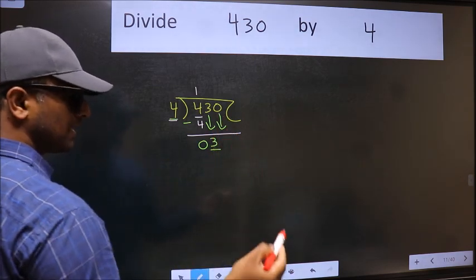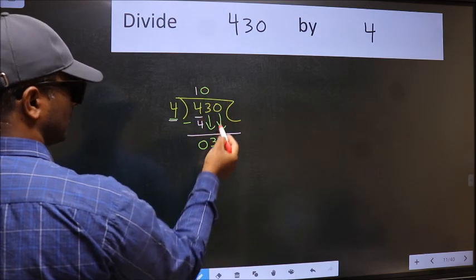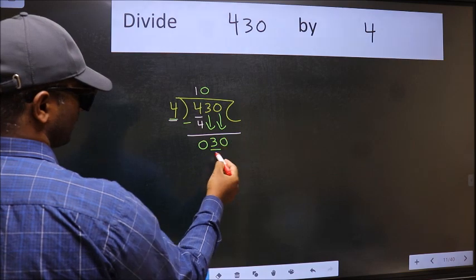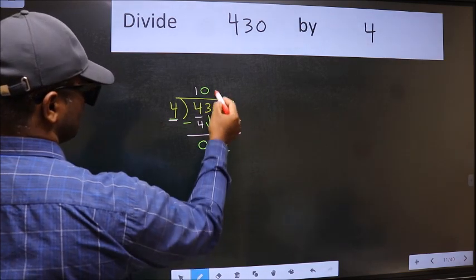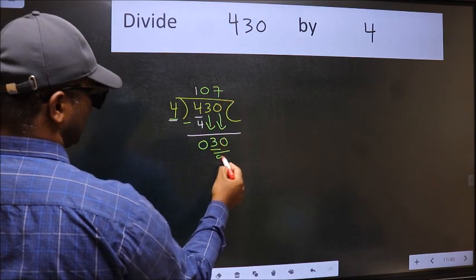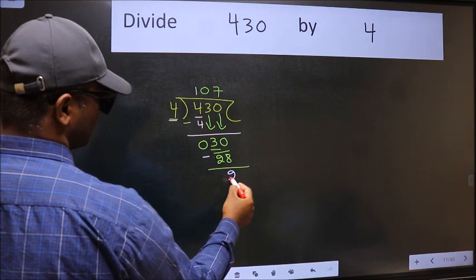And the rule to bring down the second number is we should put 0 here. Then only we can bring this number down. Now 30. A number close to 30 in the 4 table is 4 sevens 28. Now we should subtract. We get 2.